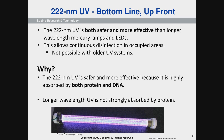The bottom line here is that 222 nanometer UV is both safer and more effective than older systems — the longer wavelength systems, which include mercury lamps and longer wavelength LEDs. 222 actually will allow continuous disinfection in occupied areas, which is not possible with older UV systems. The reason is because 222 is highly absorbed by both protein and DNA, whereas the older UV systems are really only absorbed by DNA.